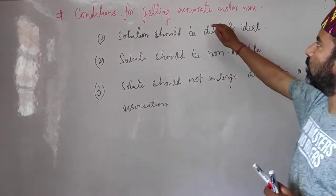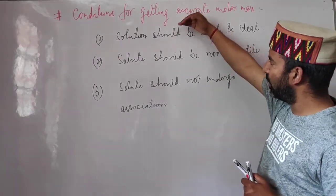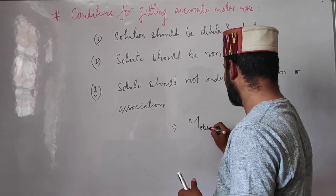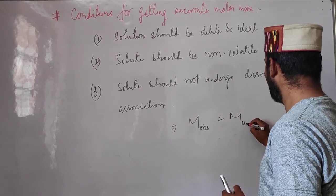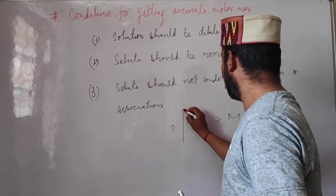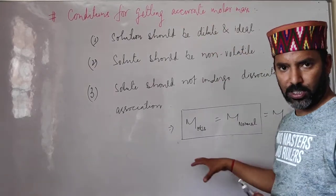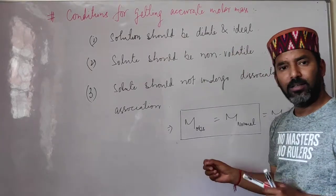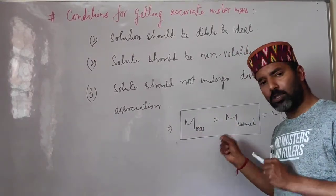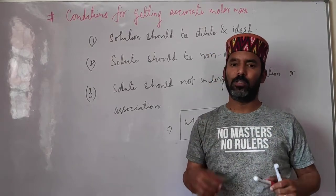Under these conditions we get accurate molecular mass of solute from colligative properties. If a solution obeys all these conditions, the molecular mass observed experimentally will be equal to the normal molecular mass — the one calculated theoretically. But if any of these conditions is not fulfilled, the observed molecular mass will be different from the normal molecular mass — we call this abnormal molecular mass.